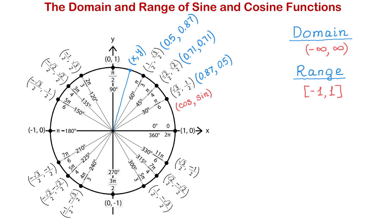You can use the calculator just to see how all these values work. For example, let's evaluate sine of any number between negative infinity and positive infinity — say, sine of negative 475. When you use your calculator, make sure you have it in radian mode. The value of this function has to be a number from negative 1 to positive 1. Using the calculator, we see that sine of negative 475 is approximately 0.58, which is a number between negative 1 and positive 1.